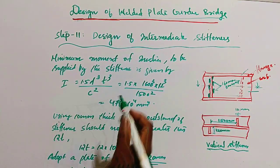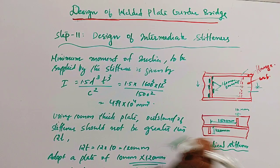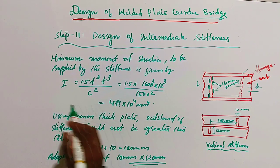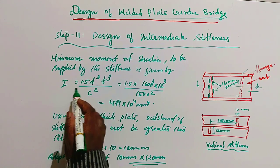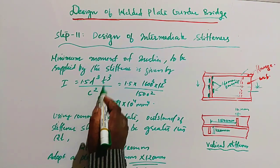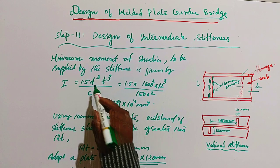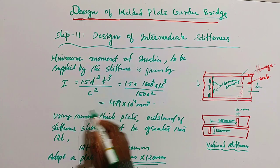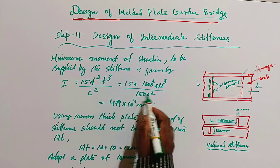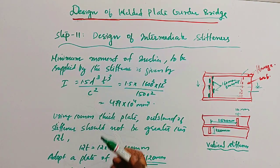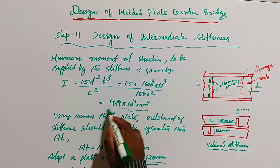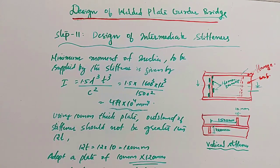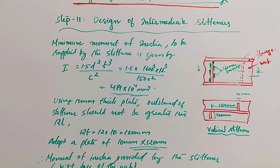The minimum moment of inertia to be provided by the stiffener is given by: I = 1.5d³t³ / c², where d = 1600, t = 12, and c = 1500 (the stiffener spacing). Substituting all values, the answer is 471×10⁴ mm⁴.